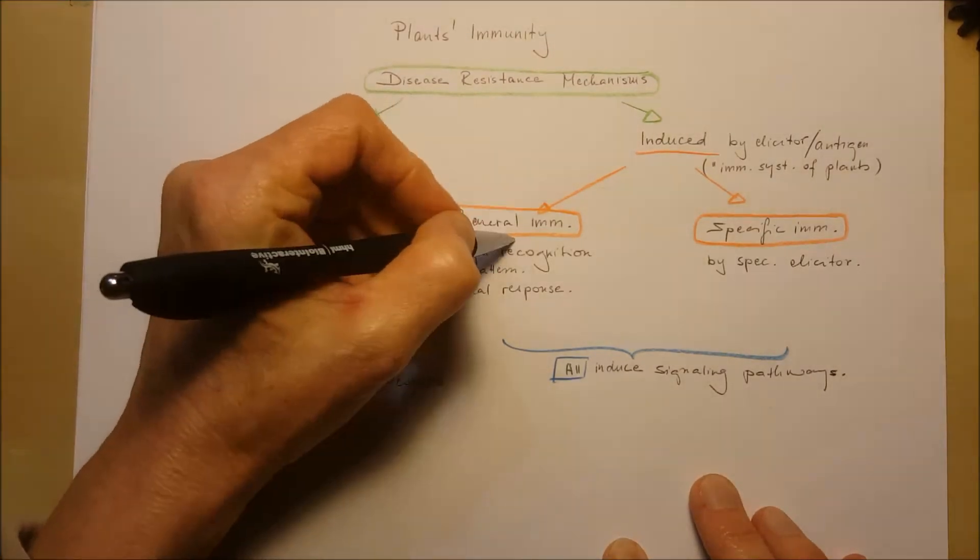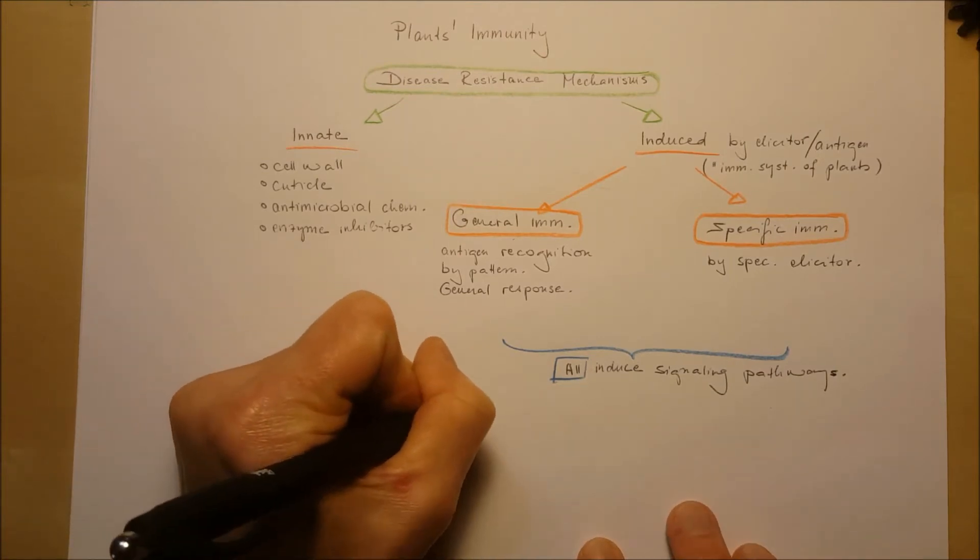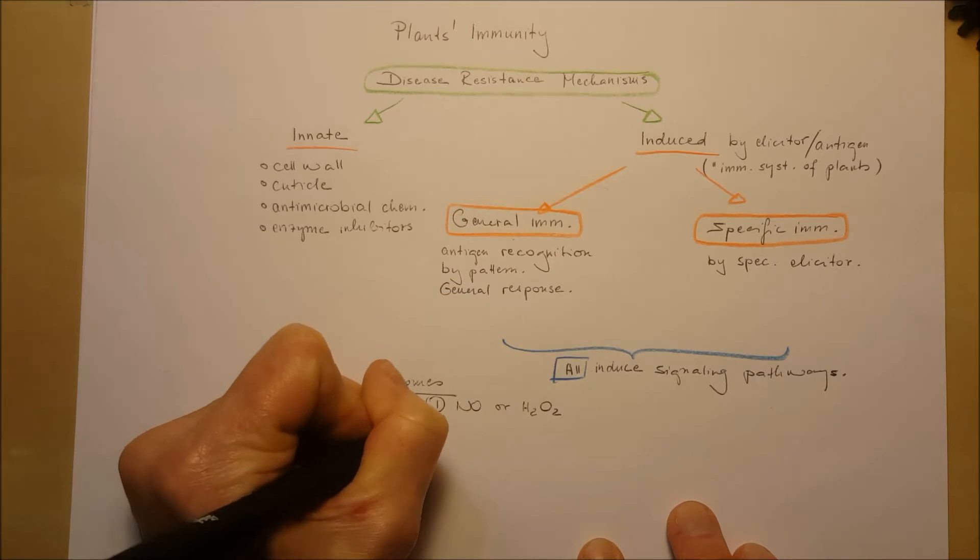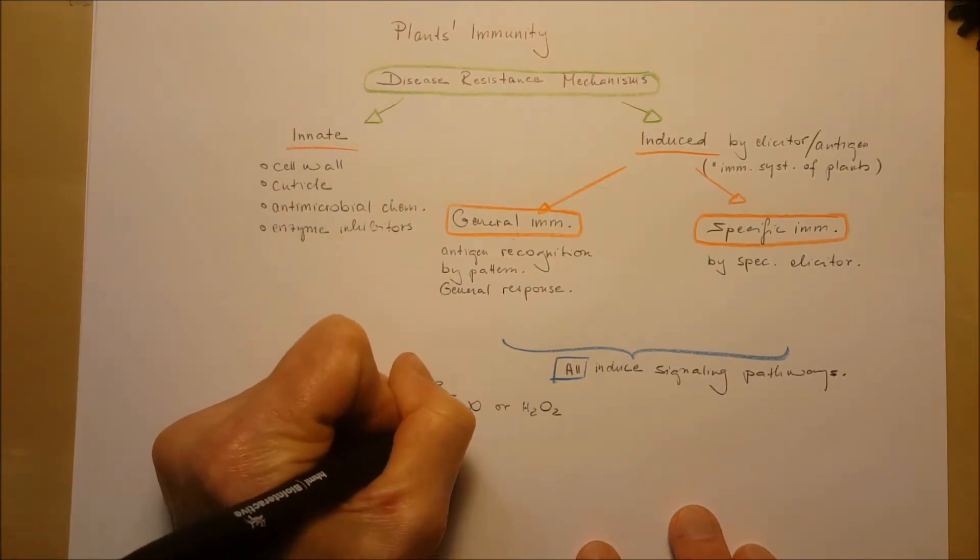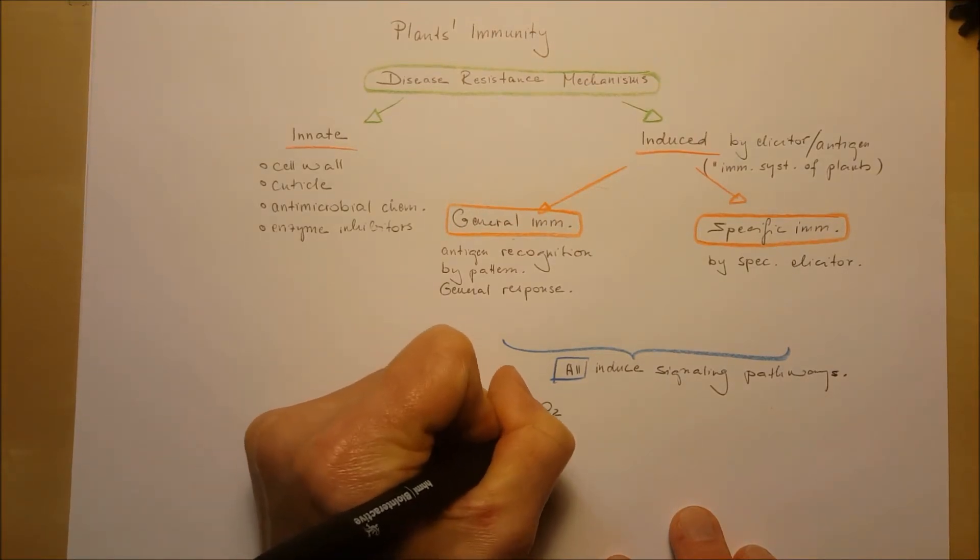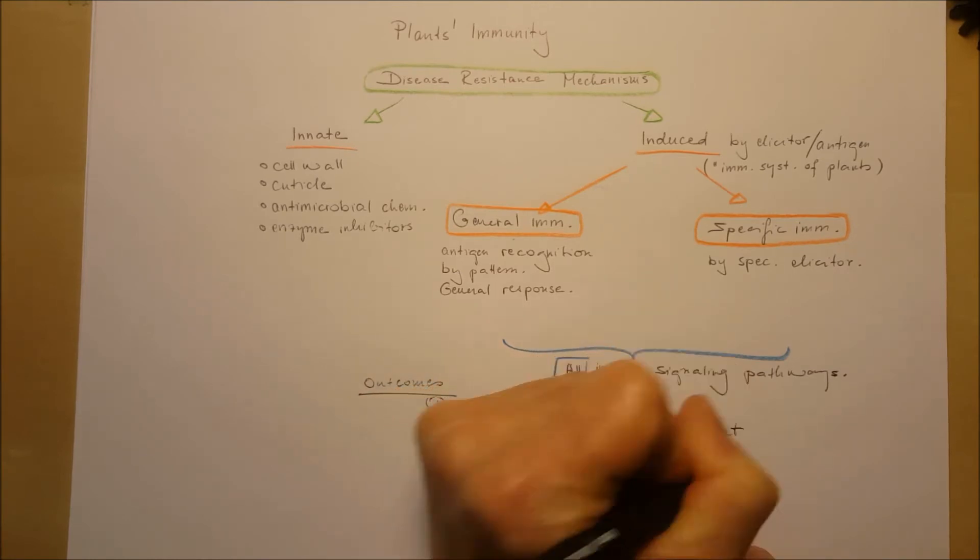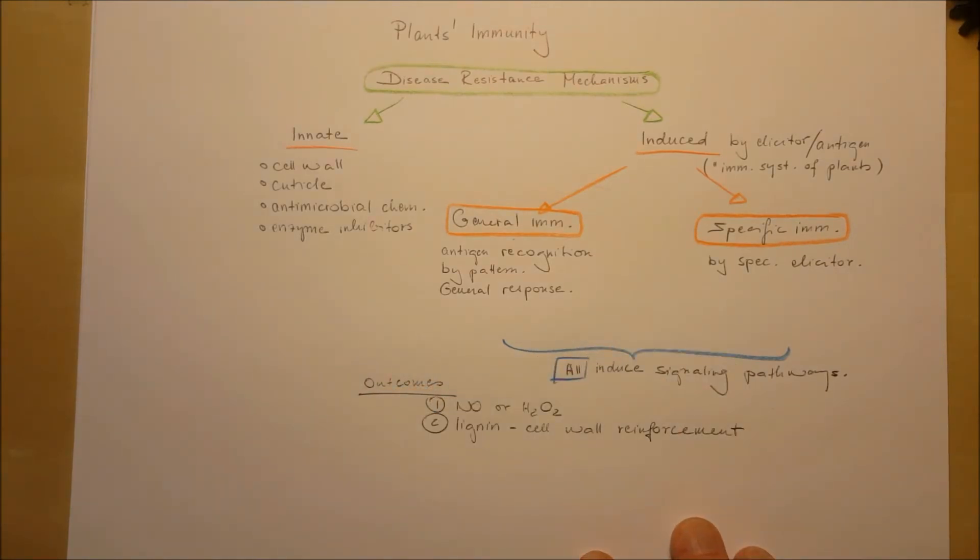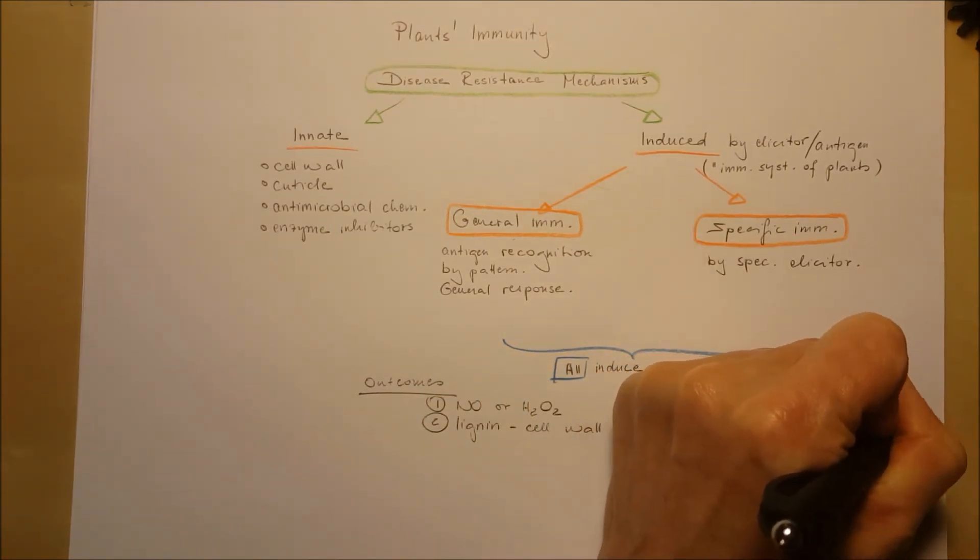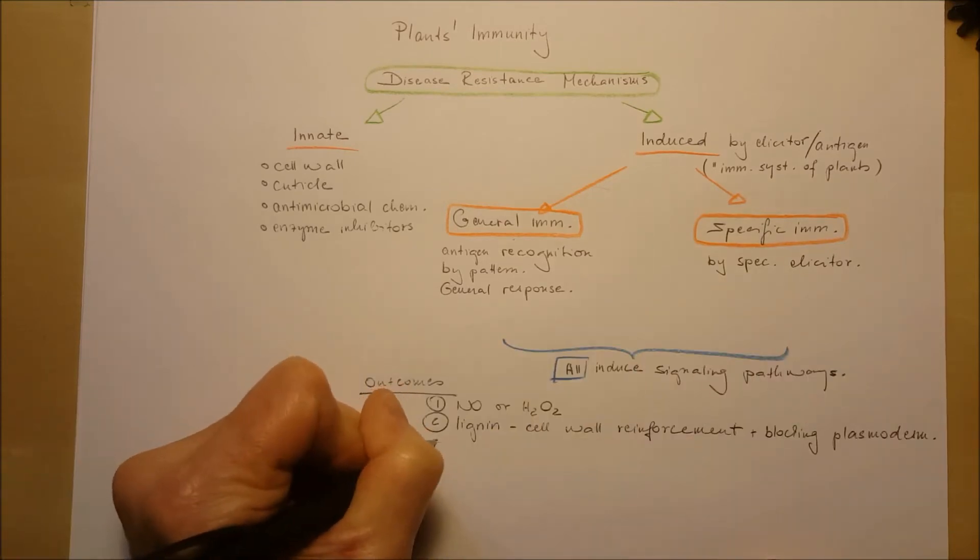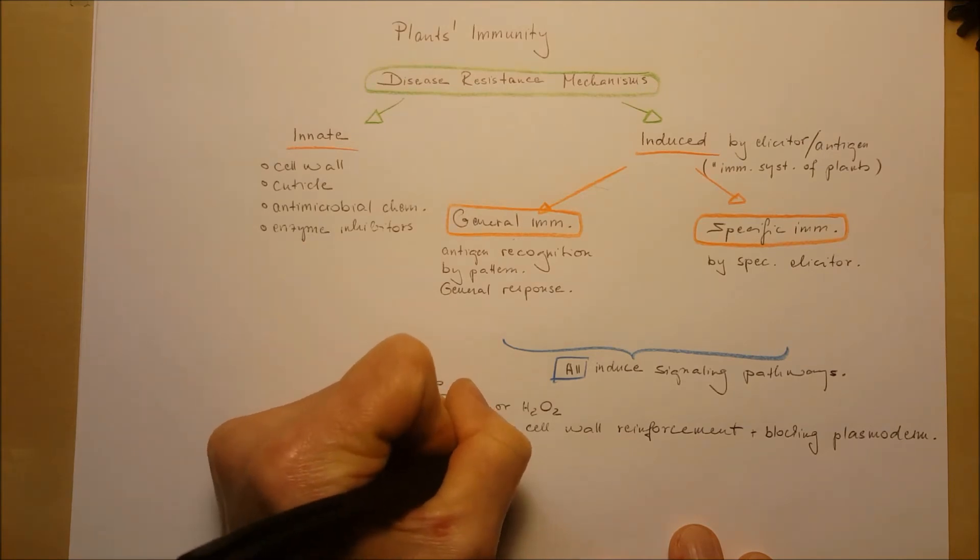The outcomes are pretty much the same for general immunity and specific immunity most of the time. The plants start to produce chemicals such as nitric oxide or hydrogen peroxide that by their nature are antimicrobial materials. Cell wall reinforcement can happen, also producing more lignin, and the lignin also would block the plasmodesmata that facilitates cell communication between cells and cellular material flow.